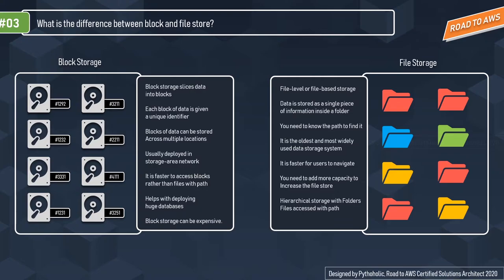File storage requires adding more capacity to increase the store. Block storage helps with deploying huge databases and hierarchical storage with folders. File storage has a hierarchical path since folders can be nested. Block storage can be expensive because every block comes with a fixed capacity — you pay for the block of capacity you provision, not the amount of data currently consuming it, making it a bit more expensive than file storage.